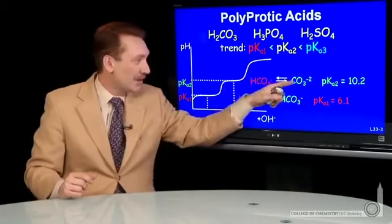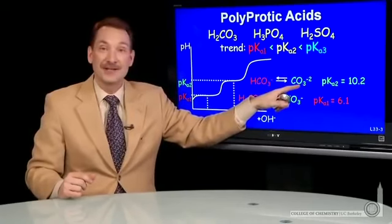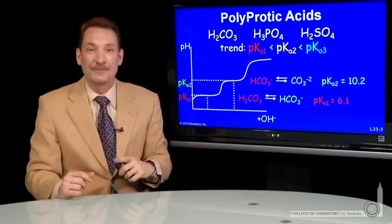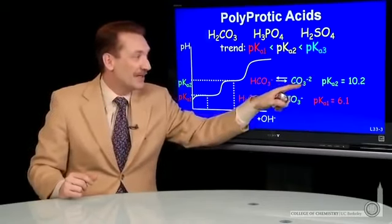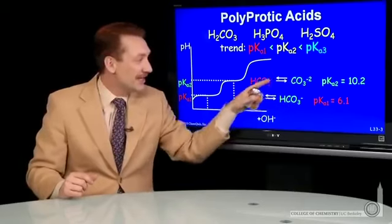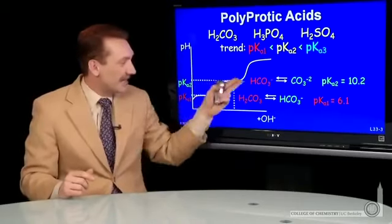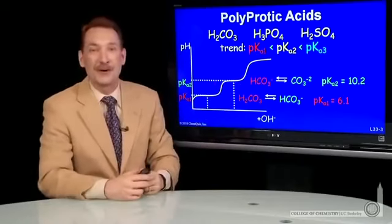And then you'll get to an equivalence point where it's 100%, essentially, of the doubly deprotonated form. So, by looking at the pH and the various pKa's, you can predict which forms are present in solution. That's the titration curve for a polyprotic acid.